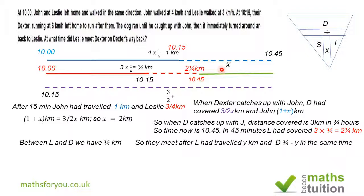So in total, when they meet somewhere there, Leslie would have covered two and a half kilometers from home. Because we know the distance is two and a half kilometers and we know Leslie's speed, which is three kilometers an hour.